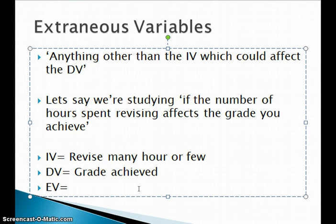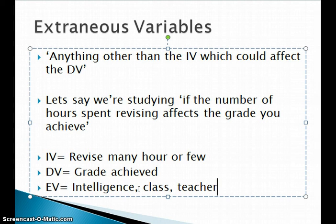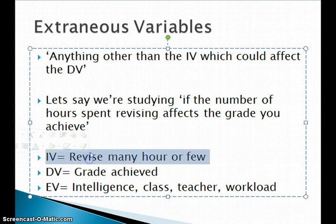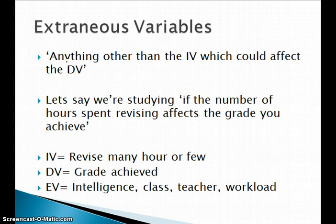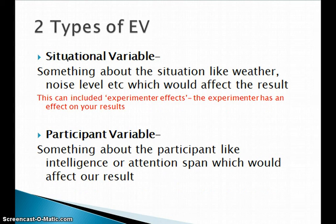Extraneous variables could include your intelligence, which class you're in, which teacher you have, how many hours you have to work, or how much coursework you have. Anything else which affects the results other than the IV is an extraneous variable (EV). There are two types: situational variables, such as something about the situation — like weather, noise level in the room, which class you're in, or which teacher you have — anything about the environment which might affect the results.